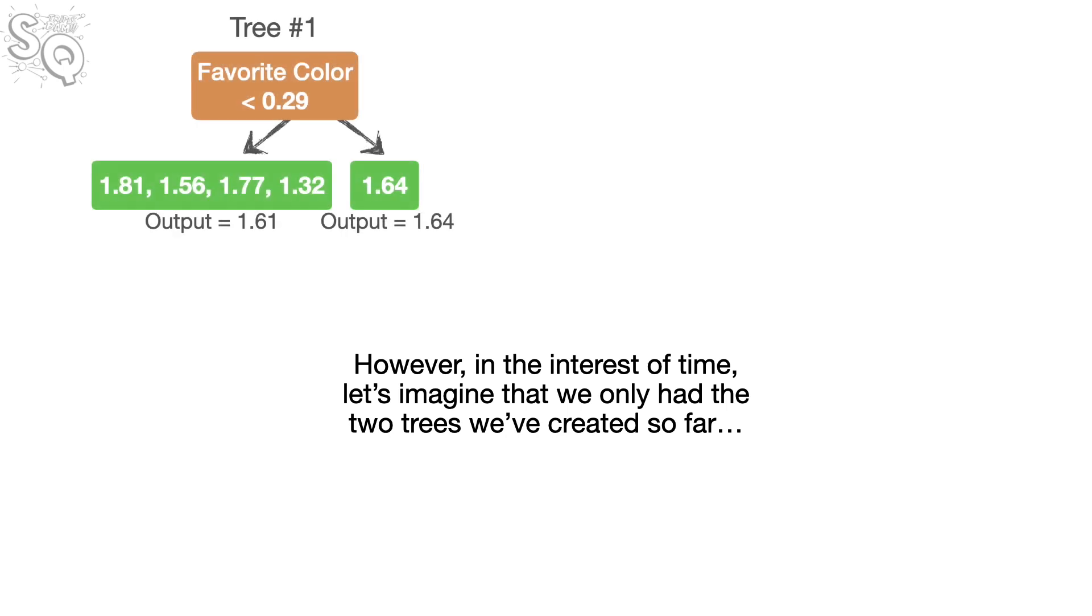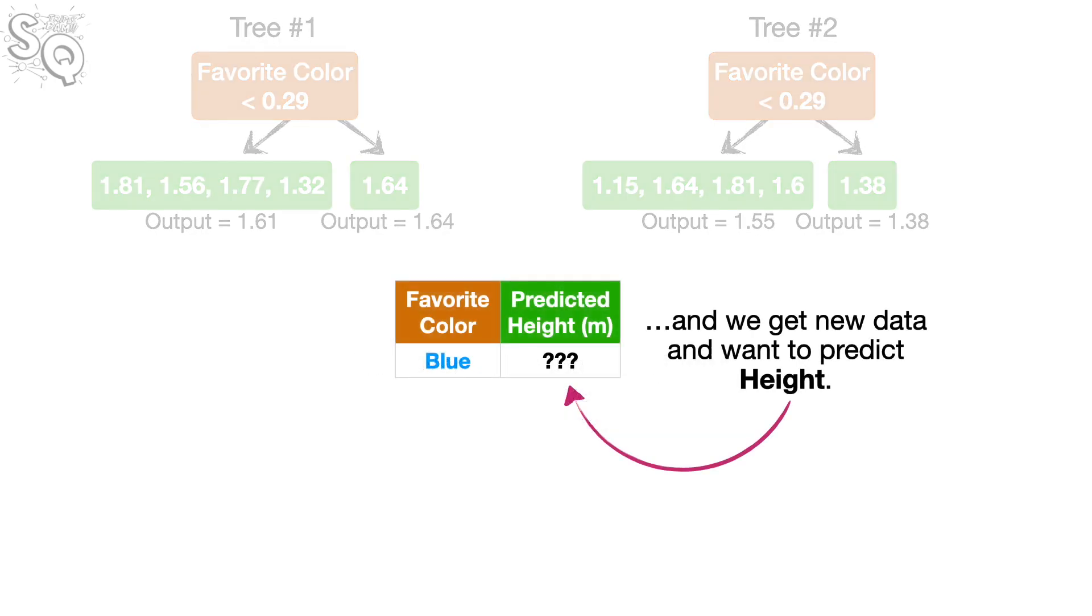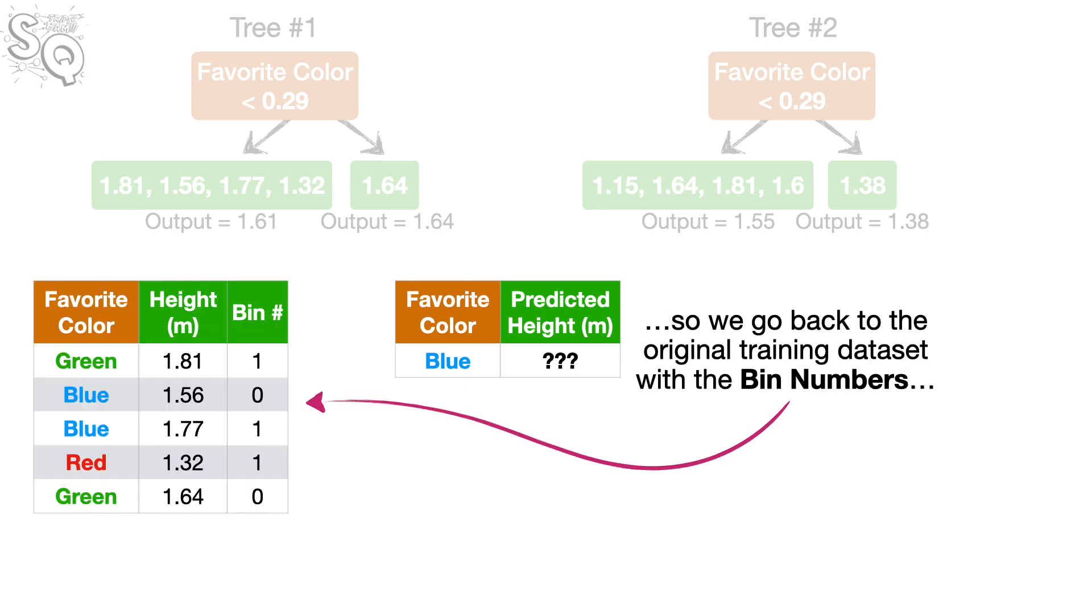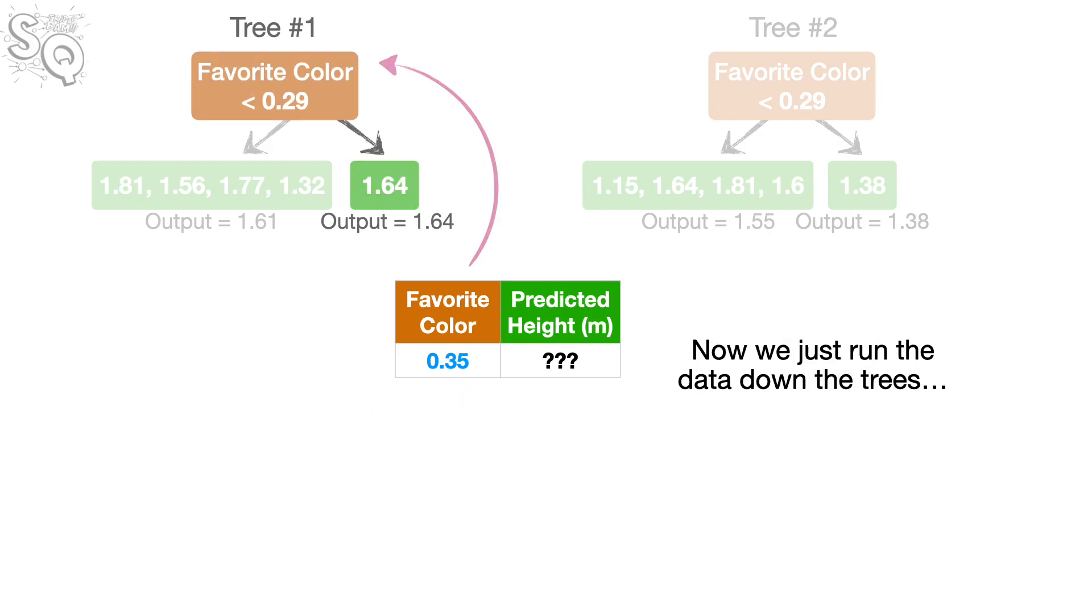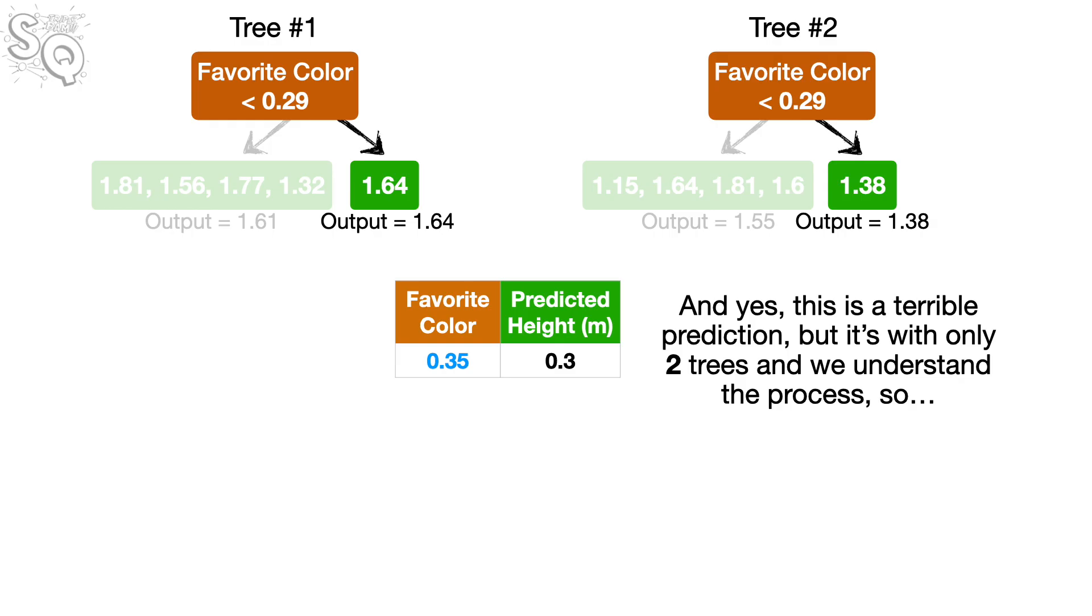However, in the interest of time, let's imagine that we only have the two trees we've created so far. And, we get new data and want to predict height. The first thing we need to do is encode blue as a number. So, we go back to the original training data set with the bin numbers, and we use all of the rows that have the same favorite color, blue, to calculate the target encoding. Now, we just run the data down the trees, and add up the output values from the leaves times the learning rate, 0.1, to get a prediction, 0.3. And, yes, this is a terrible prediction, but it's with only two trees, and we understand the process. So, bam.